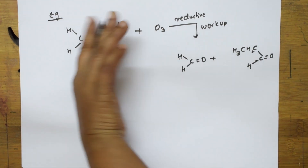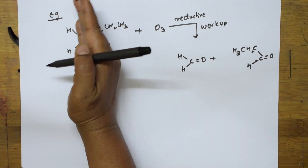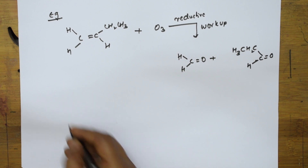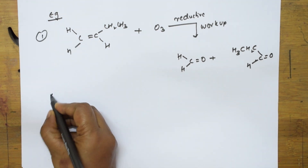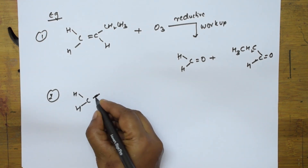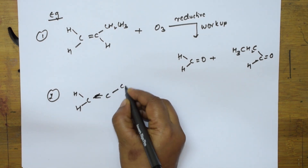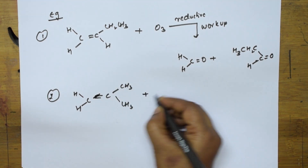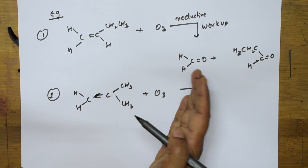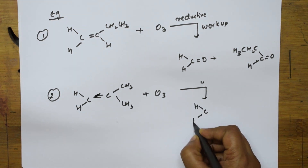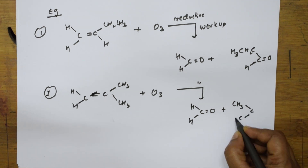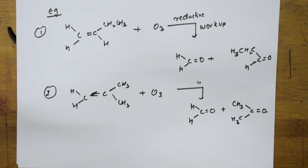First example: CH=CH with an alkene. This part is here, and this part is here. Second example: C double bond C with CH3, CH3, CH3, CH3 and oxygen — again a reductive workup. This bond is broken and we get two products: C=O plus O.